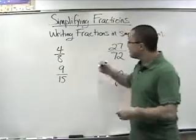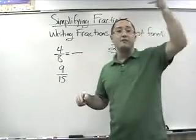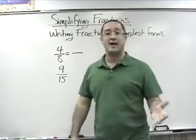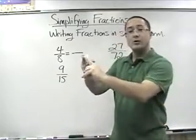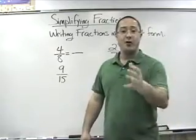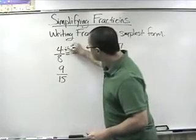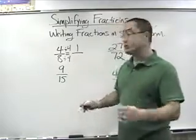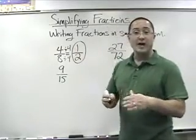Let's look at some examples. First, we have four eighths. I need to write four eighths in simplest form. The quickest and easiest way is using the greatest common factor. Factors of 4 are 1, 2, and 4. Factors of 8 are 1, 2, 4, and 8. The biggest number common to both lists is 4. Four divided by 4 is 1, and eight divided by 4 is 2. So four eighths simplifies to one half.